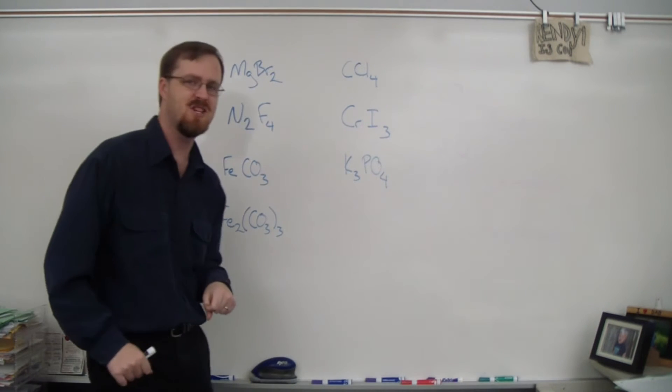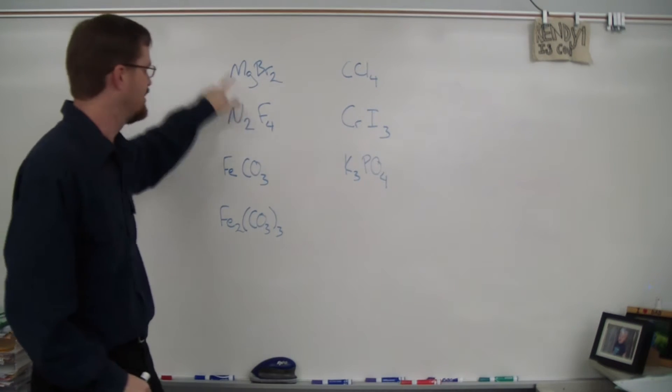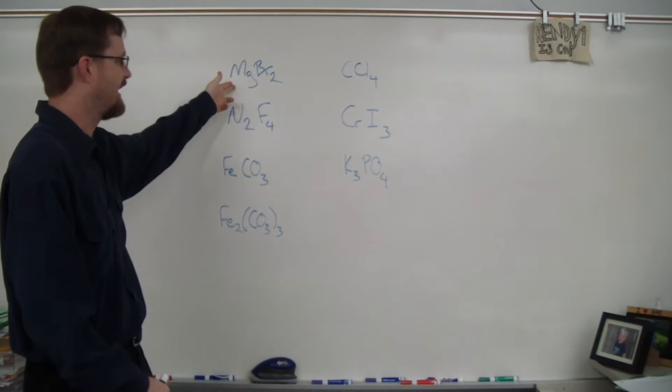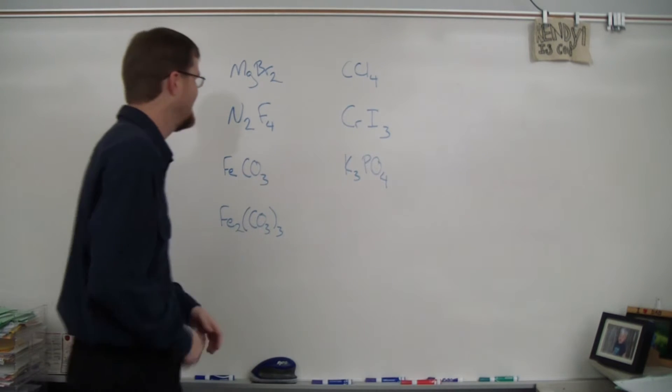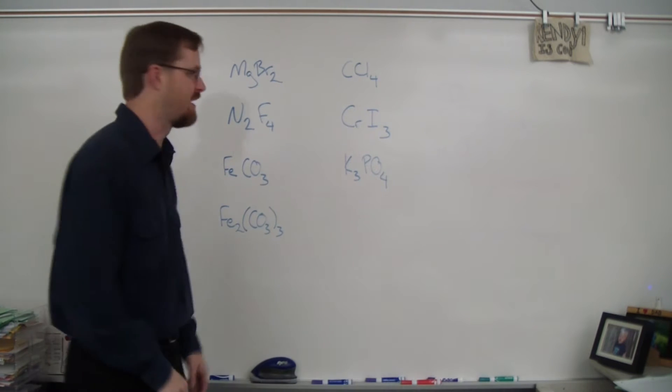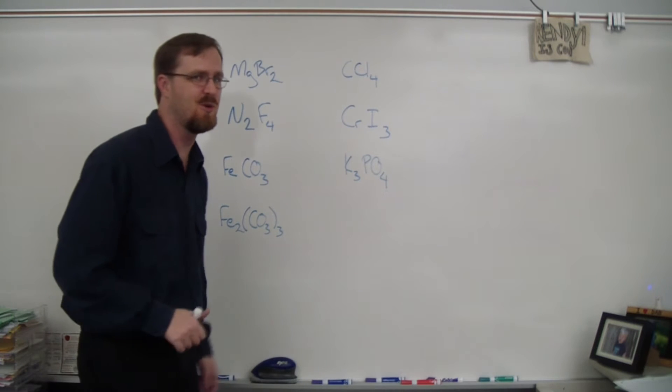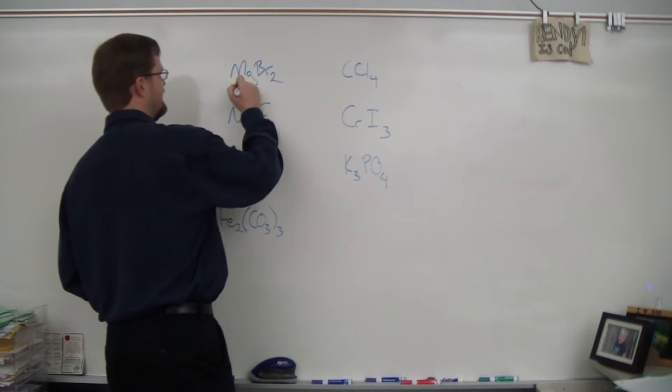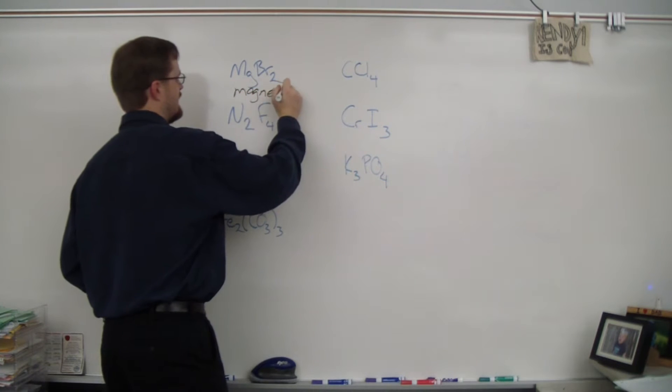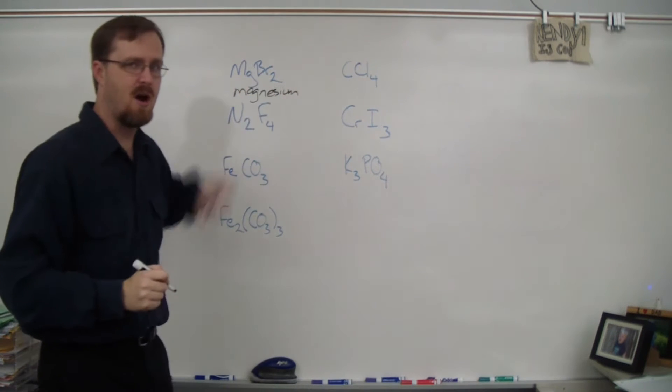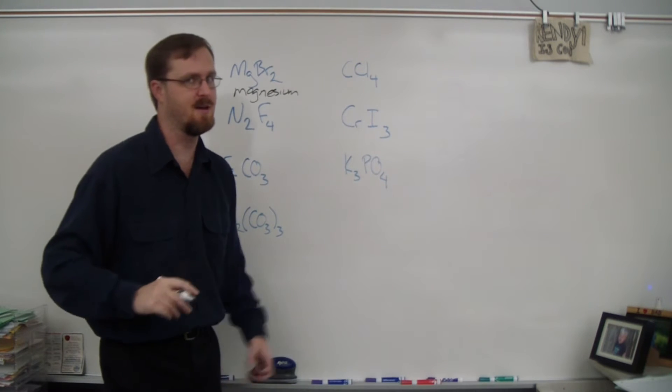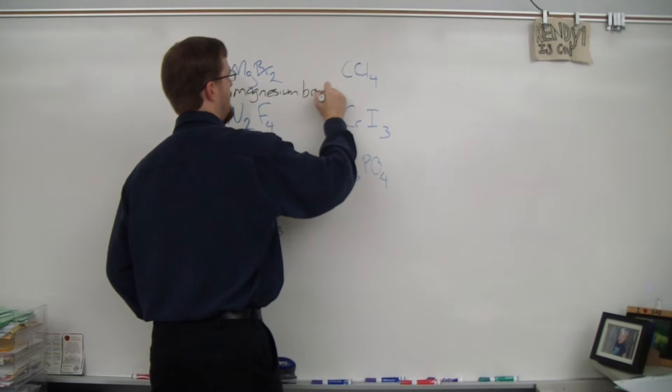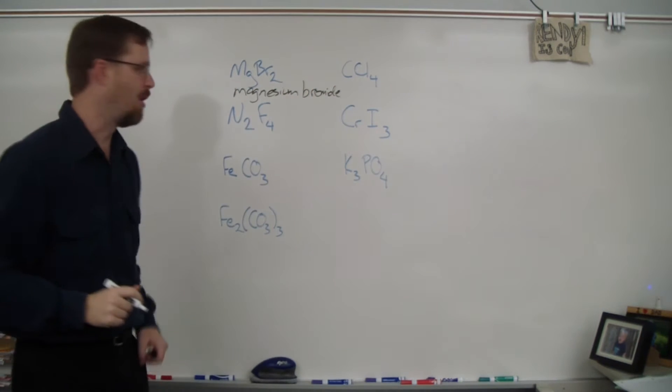So our first one here is MgBr2. Let's go through our naming tree. First one is, is the first element a metal? Well, this is magnesium. It is definitely a metal. So the next question we ask is, is it a transition metal? And the answer is no, it is not. It is in group 2A. So we're just simply going to write the name as we see it. MG is magnesium. And BR is bromine. And since it's not a polyatomic ion, we're going to change the ending to IDE. So bromide. Magnesium bromide.